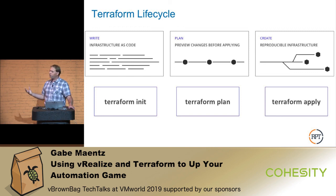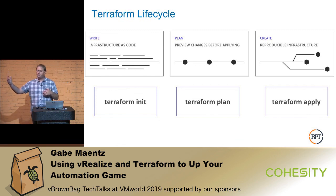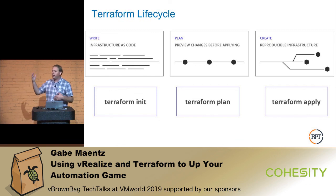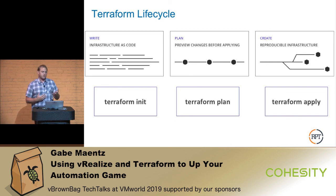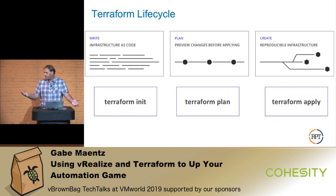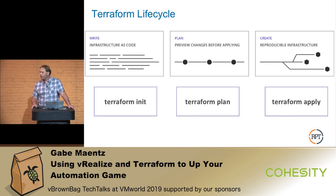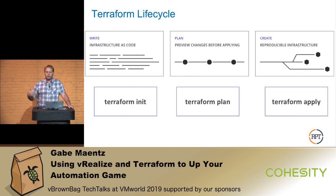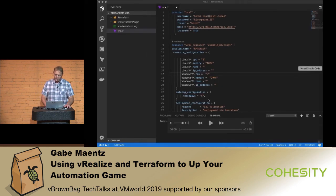Then you issue a Terraform plan. Terraform plan goes out to your environment, sees what's already there, and checks what needs to change based on the configuration you gave it. Perhaps there's nothing out there already, so it will build from scratch. Once you have a plan in place, you can apply it. The workflow is: write the configuration, initialize it, plan it, make sure your plan looks good, and then perform an apply.